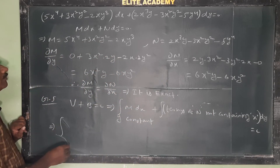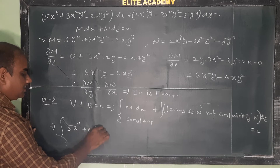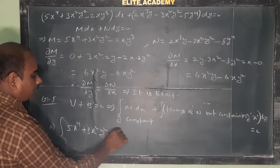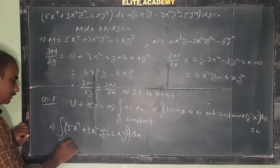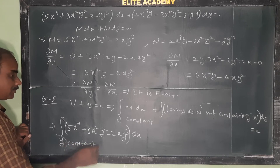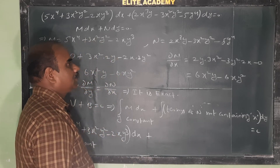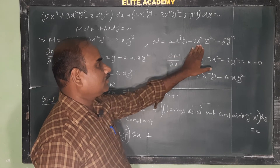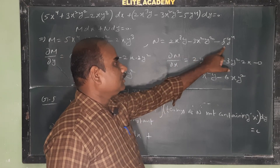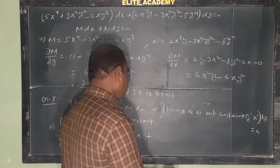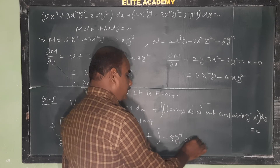So the integral is: ∫(5x⁴ + 3x²y² − 2xy³) dx, where y is constant. From N, the terms containing x are 2x³y and −3x²y², so we leave those. The only term in N not containing x is −5y⁴. So we integrate −5y⁴ dy.